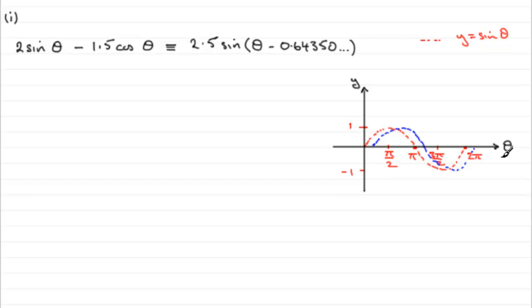Like that. So, this graph here, we'll just do a little dotted line there. This is the graph then of y equals the sine of theta minus 0.64. I'll just go 64 odd radians.